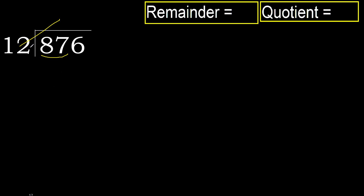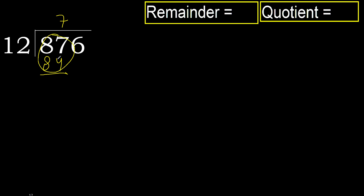12 multiplied by 8 gives 96, which is greater. Multiplied by 7 gives 84, which is not greater. Subtract: 87 minus 84 is 3.